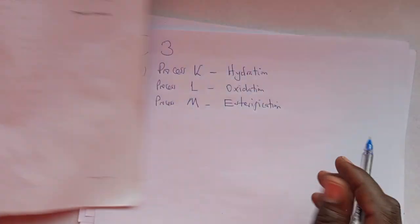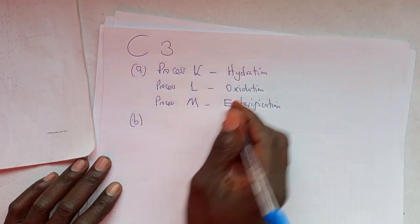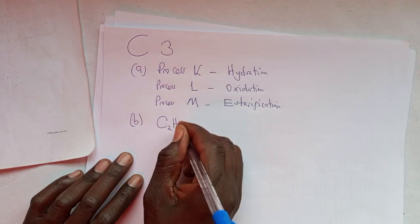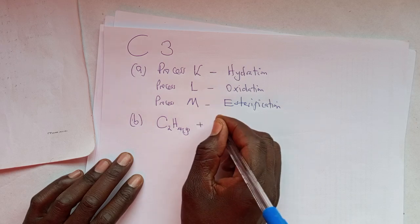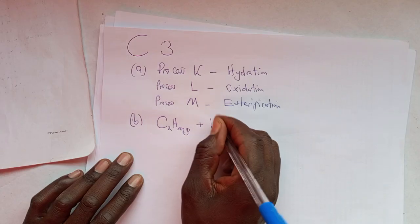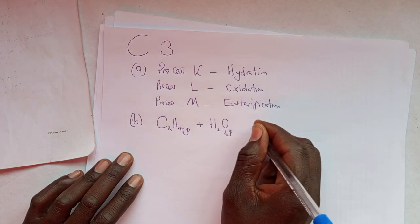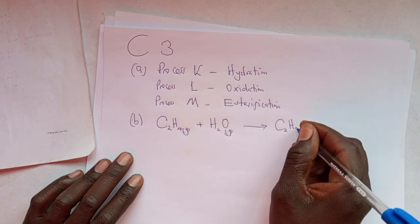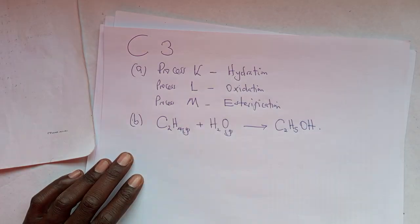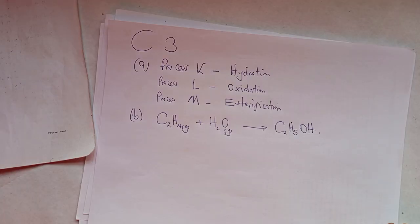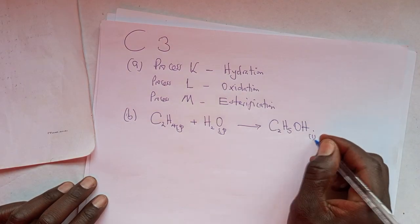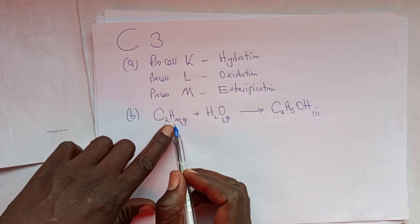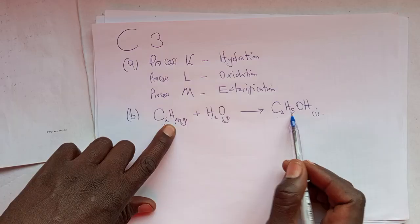For part B, we need to construct the chemical equation describing process K and include the state symbols. The hydration of ethene would be: ethene in gaseous state plus water in gaseous state gives us ethanol — C2H5OH — in liquid state.